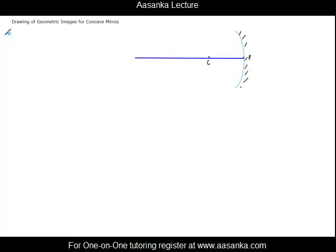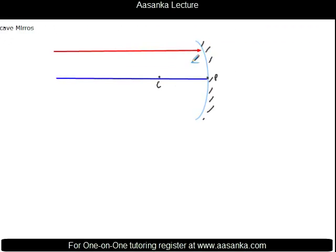The first case is when the object is at a very long distance away from the mirror, or at infinity. For example, the sun could be treated as an object at infinity. The ray coming from infinity will be parallel to the principal axis. These are incident rays; they strike and get reflected. To find the direction of reflection, you have to obey the laws of reflection, so the incident angle equals the reflected angle. You draw a normal at the point of incidence.